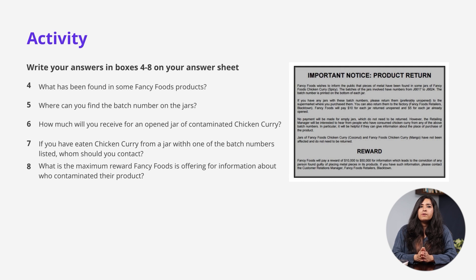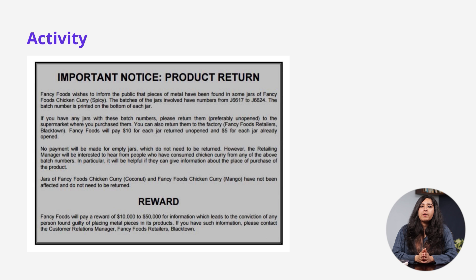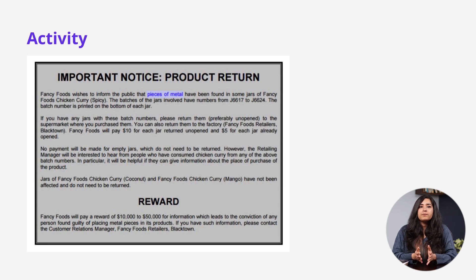The first question is: what has been found in fancy food products? As we go through the first paragraph, we can see the answer in the first sentence itself: Fancy Foods wishes to inform the public that pieces of metal have been found in some jars of Fancy Foods chicken curry — that is the spicy version. So the answer is pieces of metal. Since we don't have a word limit given, this answer will do. But if the instructions said no more than two words, the answer could be metal pieces.